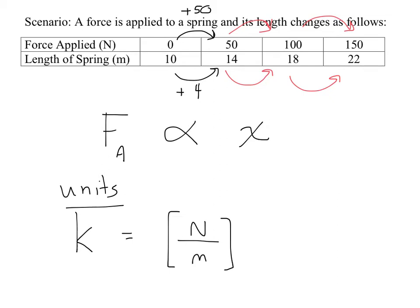So what I could say is: K is a ratio of the force applied over the stretch. If F equals KX and you solve for K, you divide and get force over X equals K. Hooke's Law looks at the force that's in the spring.